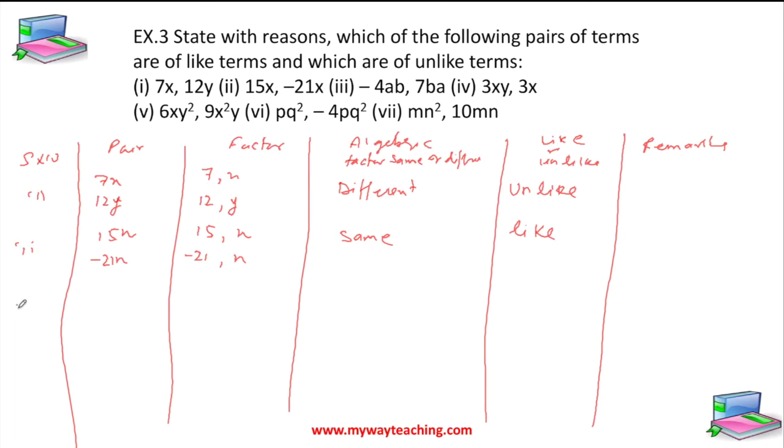For the third one, minus 4ab and 7ba. The factors are a and b, and 7, b, and a. The algebraic factors are the same because ab equals ba, so it's like terms.